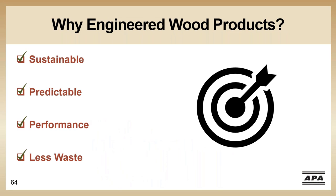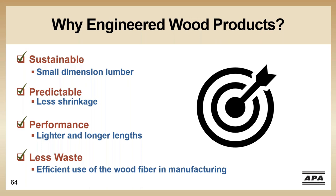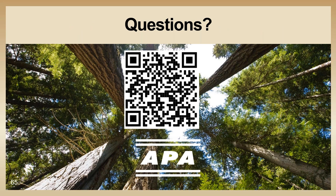This is our last slide before the Q&A session. Going back to the question from the beginning — why use engineered wood products? There are four main reasons designers and builders typically turn to engineered wood: it's sustainable (manufacturers can use small-dimension lumber), predictable (less movement, less shrinkage), high performance (can be lighter, manufactured to longer lengths), and results in less waste through efficient use of wood fiber in manufacturing. With that, I believe Mary has been monitoring questions and I'm going to kick it back to her.